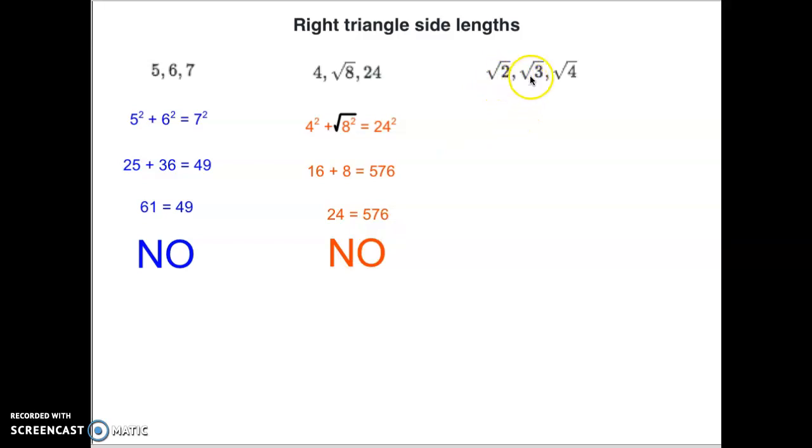How about the square root of 2, the square root of 3, and the square root of 4? I'm working on this one right here now. Well, if we take each of those and we square them out, the square root of 2 squared plus the square root of 3 squared plus the square root of 4 squared, the square and the square root cancel each other. So in each case, the square and the square root cancel. So you just end up with 2 plus 3. Does that equal 4?